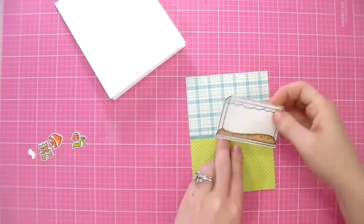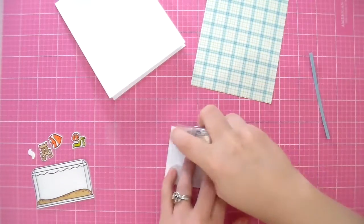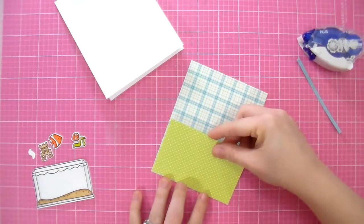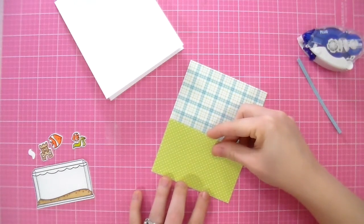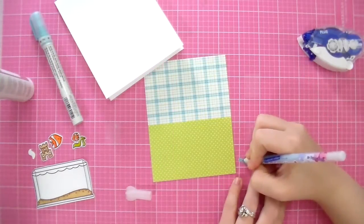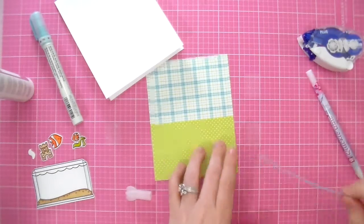And I've already pre-colored my fish tank and my fish using my Zig Clean Color Real Brush markers. So first I am taking the polka paper and gluing that to the bottom of the plaid paper, and then I'm gluing that strip of Stampin' Up! paper right on top.